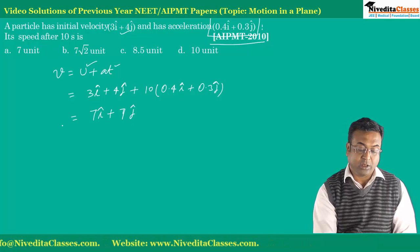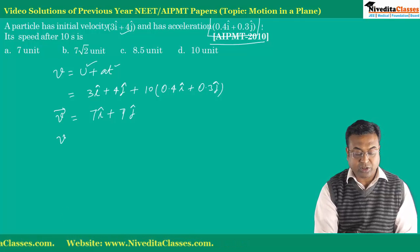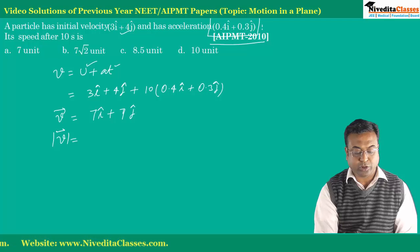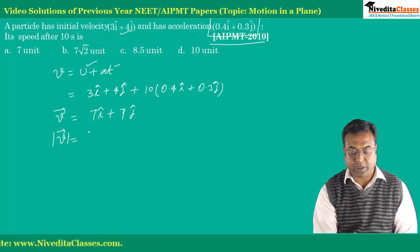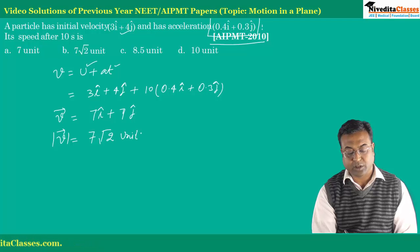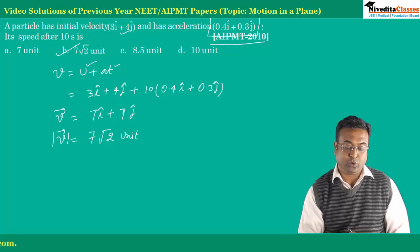Ye humara velocity vector a gya. Aur iska agar value nikalenghe, to value kitnye ho jayegi? 7 square plus 7 square ka root, which will be actually 7 root 2. To yeh jo hai, woh is question ka correct answer.